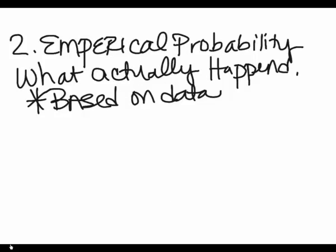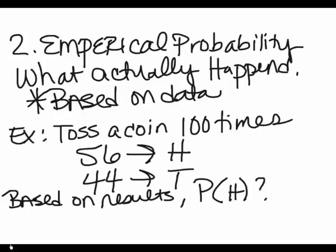The next type is empirical probability. That's what actually happened. So an experiment was actually done, and it's based on real data. So for example, let's say I tossed a coin 100 times, and out of those times, 56 times I got heads, and 44 times I got tails. So you see here how I'm already starting by giving you data? I'm already starting by telling you about an experiment, so that's empirical probability, because I'm actually basing it on an experiment that I did. I'm giving you the data. Based on those results, what's the probability of you getting heads?